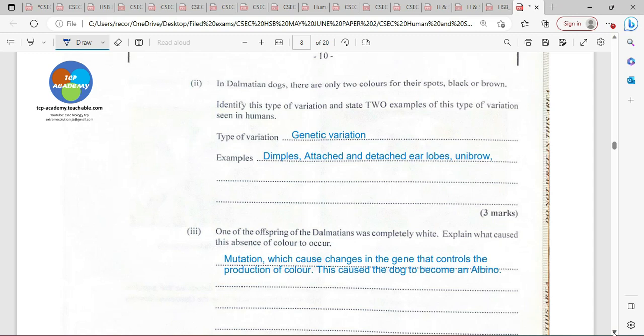And it's pretty much influenced by the environment. When it comes to the absolute black and brown, that's going to be genetic variation. One might say it is a discontinuous variation.